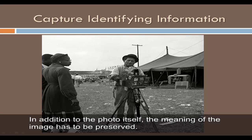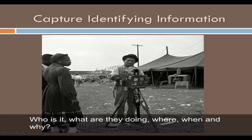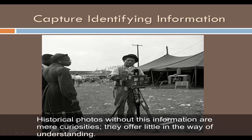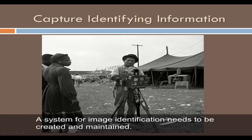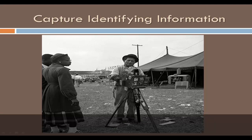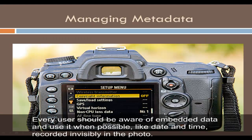In addition to the photo itself, the meaning of the image has to be preserved. Who is it? What are they doing? Where? When? And why? Historical photos without this information are mere curiosities — they offer little in the way of understanding. Unidentified photographs have value only as long as the person who produced them is available. A system for image identification needs to be created and maintained.